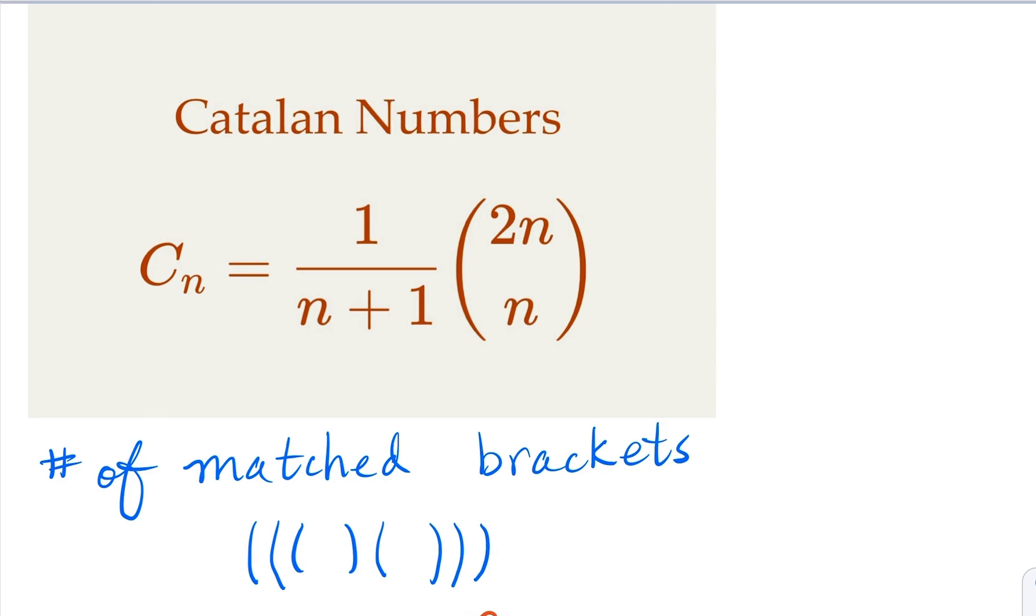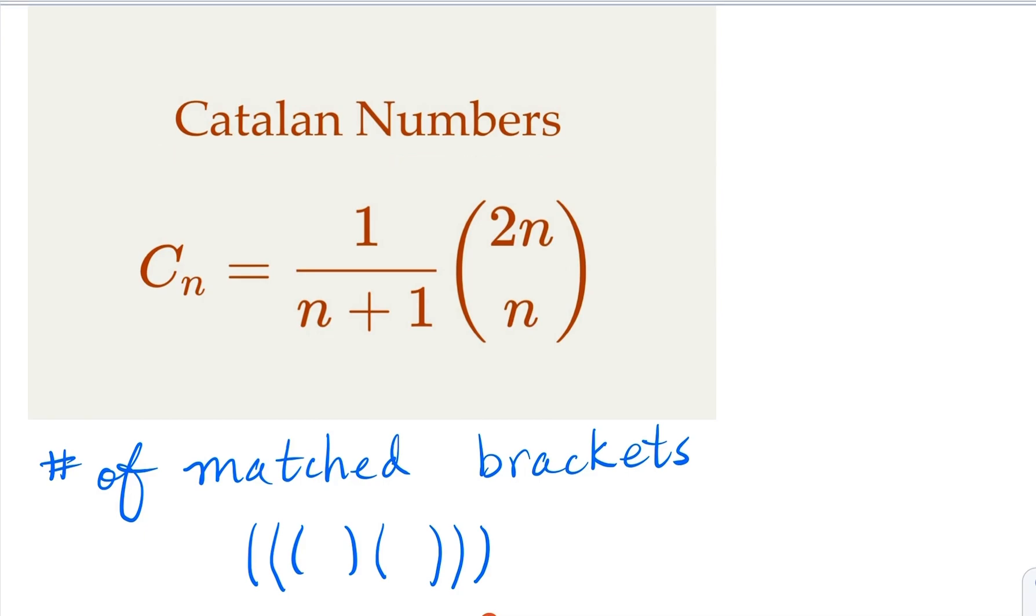So it represents a lot of counting problems. For example, let's count the number of possible ways of matched brackets here. We have four pairs. It turns out that there are 14 of them. That is, C4 equals 14, if we plug in the number here.